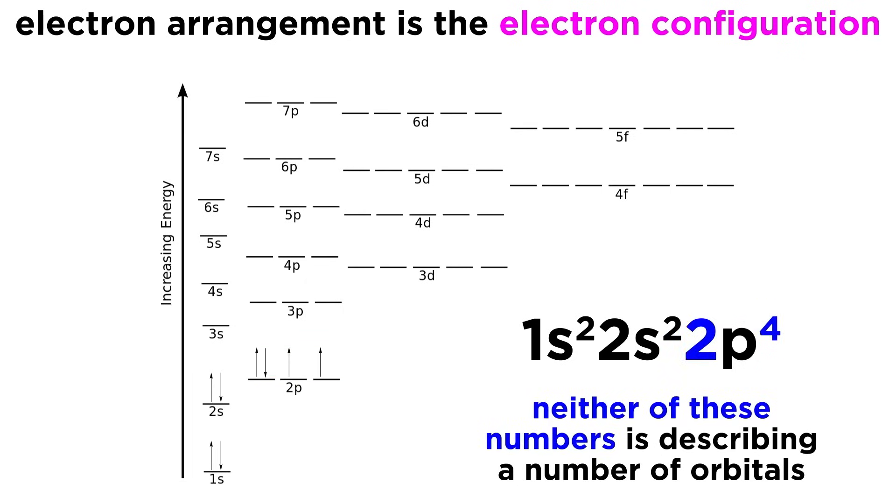Let's make sure we understand that neither of these two numbers is telling us how many orbitals are being described, as that number is implied, since each energy level contains one s orbital, three p orbitals, and five d orbitals. This is what dictates the maximum numbers allowed for the superscript values, since any atomic orbital can hold a maximum of two electrons, according to the Pauli exclusion principle.